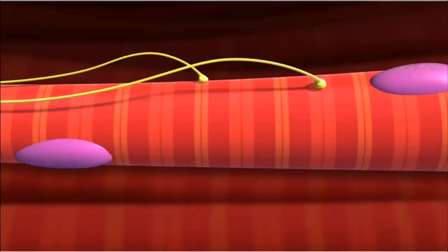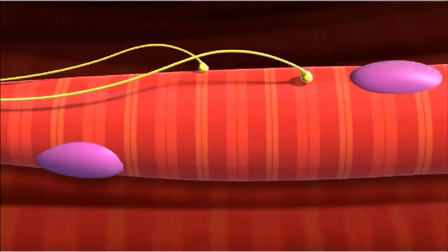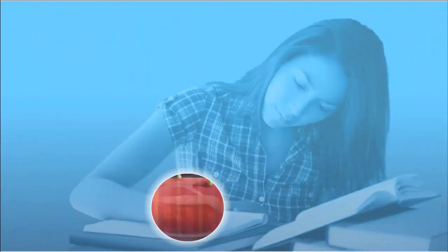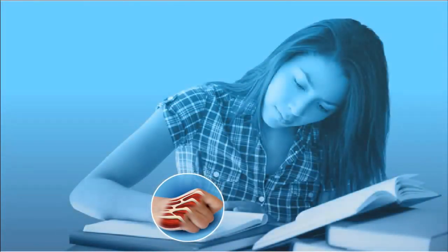As the sarcomeres in myofibrils contract, the entire muscle fiber will shorten. When muscle fibers contract in unison, a muscle can produce enough force to move the body, allowing you to take notes.